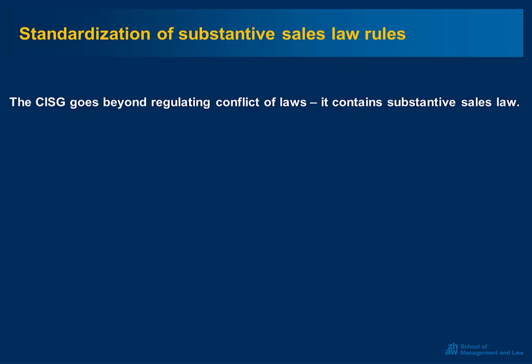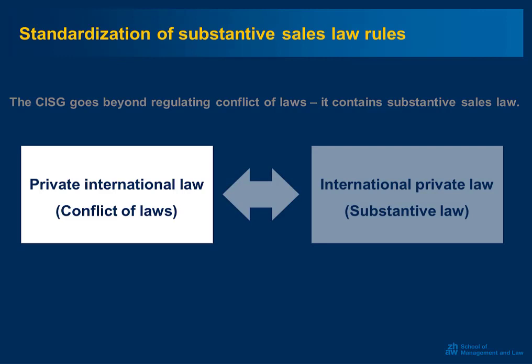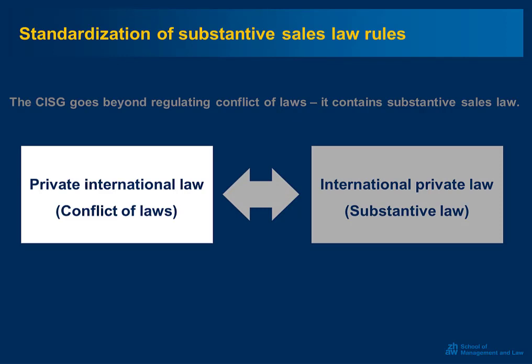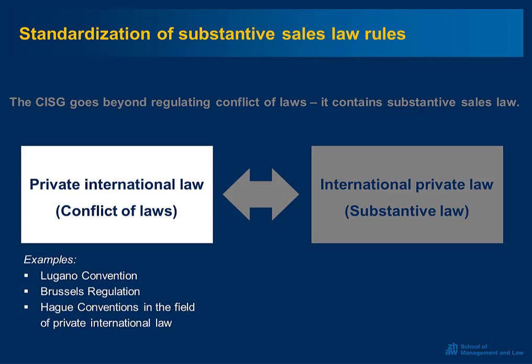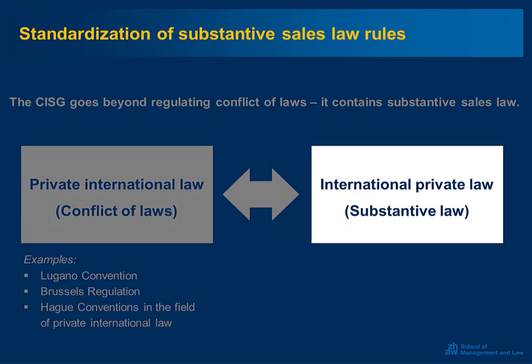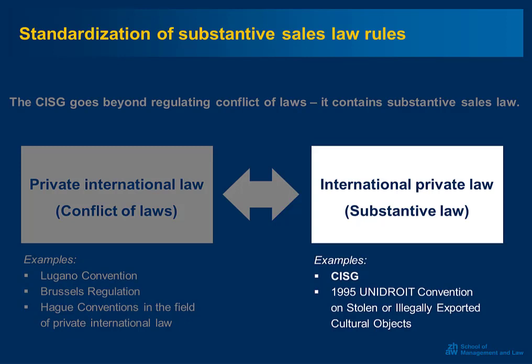This brings us to an important distinction: the distinction between private international law, or conflict of laws, and international private law, which is substantive law of an international character. It sounds pretty much the same — private international law and international private law — but it is entirely different. Private international law is what is regulated in the Swiss Code of Private International Law on a national level, and in treaties including the Lugano Convention, the Brussels Regulation, and the Hague Conventions. In contrast, international private law is what is contained in the CISG and in other treaties such as the 1995 UNIDROIT Convention on stolen or illegally exported cultural objects. But the CISG is by far the most important example of international private law.